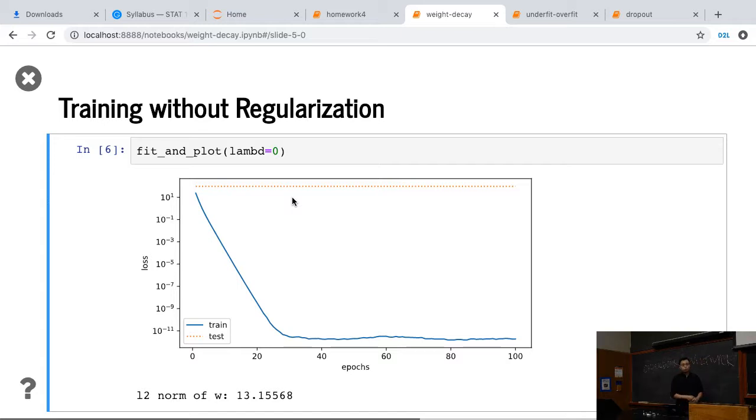The reason is because we are using 100 dimensions, but we are only using a very small number of examples. So even a linear model can overfit this dataset a lot. And we can compute the final W, L2 norm, is 13.